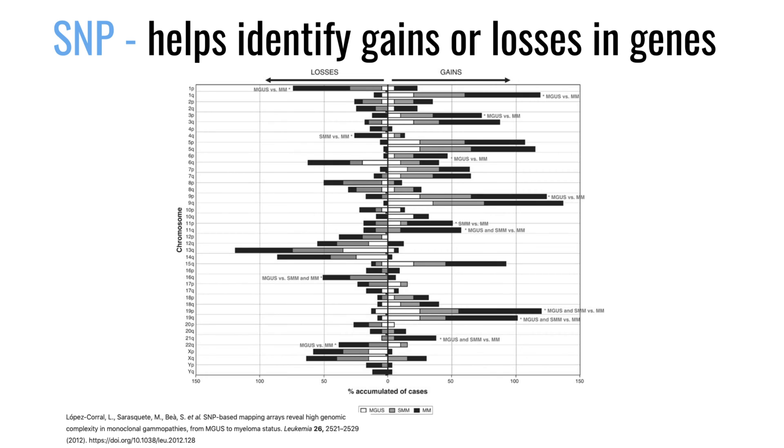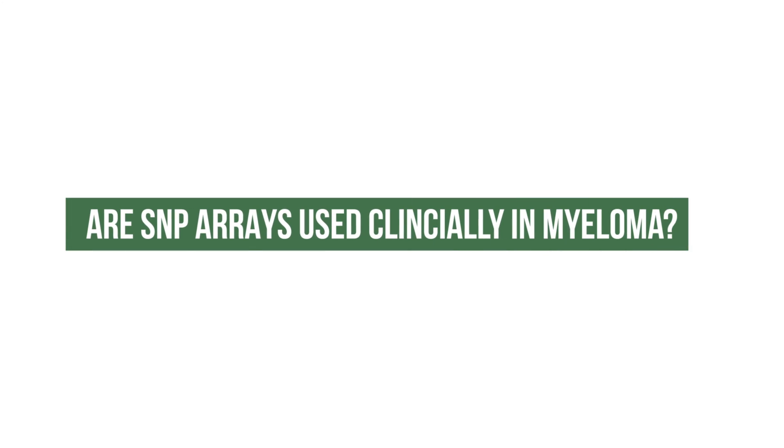As opposed to FISH, which looks just where you're probing, the SNP array looks at the whole genome for gains and losses of chromosomal material.